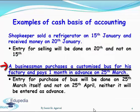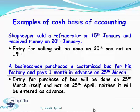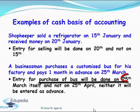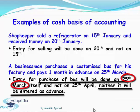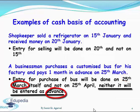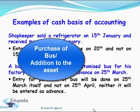In our second example, a businessman purchases a customized bus for his factory and pays one month in advance, that is on 25th March, meaning he will receive the bus on 25th April. But as he is following cash basis of accounting, he will record the purchase on 25th March itself, and it won't be entered as an advance payment for the bus — rather it will be entered as a purchase of bus or addition to the asset.